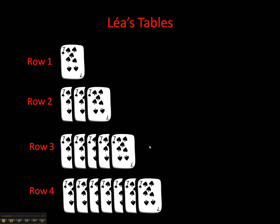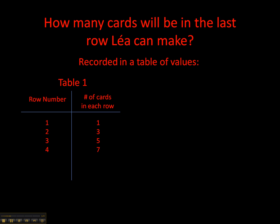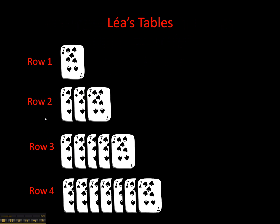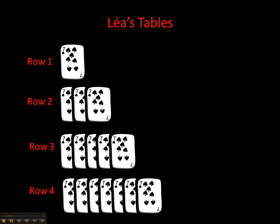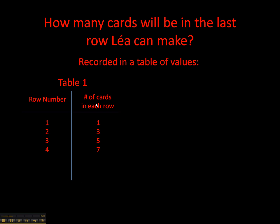She's going to record these in a table of values. There were four rows, so those row numbers are 1, 2, 3, 4. And the number of cards in each row went from 1 to 3, then to 5, then to 7. That's what we have in our second column: 1, 3, 5, 7.